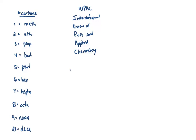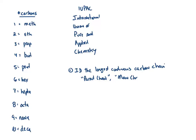The IUPAC rules: the first thing we always have to do is identify the longest continuous carbon chain. Sometimes this is called the parent chain — I like to call it the main chain. If you have a nice simple molecule, the main chain is just literally the molecule. We can number it 1, 2, 3, 4, 5, 6 — so that means this is hex, telling us there are six carbons.